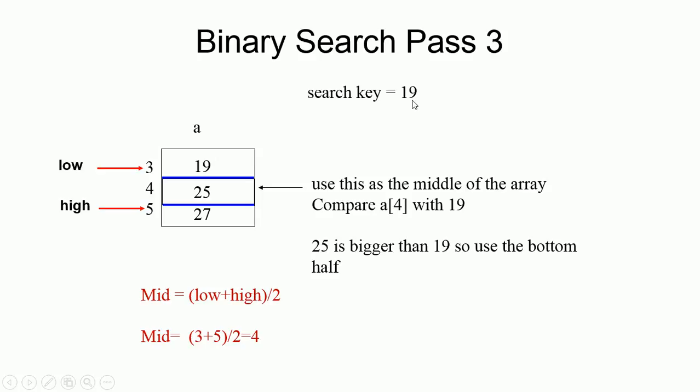Means what? What shall I do now? Lower. Whether we have to consider lower half or upper half? Lower half. Which pointer you have to adjust? High. High equal to mid minus 1. What is the value of mid? 4. 4 minus 1? 3. Therefore, low, what is the value of low? 3. What is the value of high? 3. What is the value of mid? 3. What is A of 3? 19.